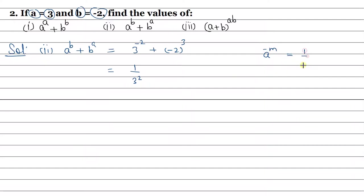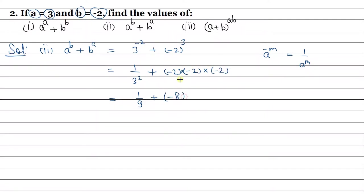Using the formula, a to the power minus m becomes 1 upon a to the power m (positive). So 3 to the power minus 2 becomes 1 upon 9. For minus 2 to the power 3, we multiply minus 2 three times: minus times minus is plus, then plus times minus is minus, so we get minus 8. The expression becomes 1 upon 9 plus minus 8, which equals 1 upon 9 minus 8.